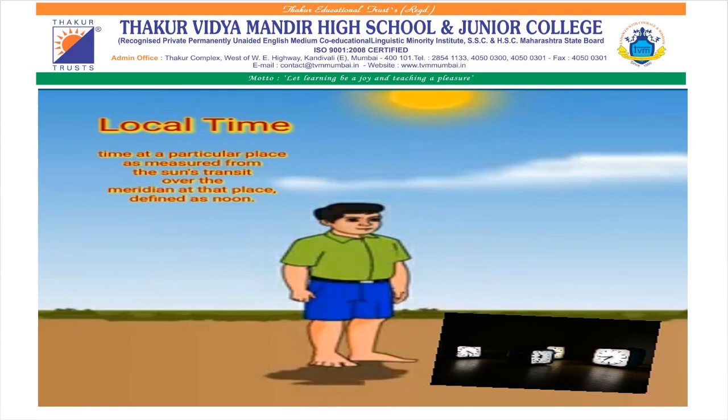In the last session, we have learnt about local time. What is called local time? The time of a place as decided by the location of the sun in the sky is called local time. The best way to decide local time of a particular place is to set it according to the noon in that particular place.